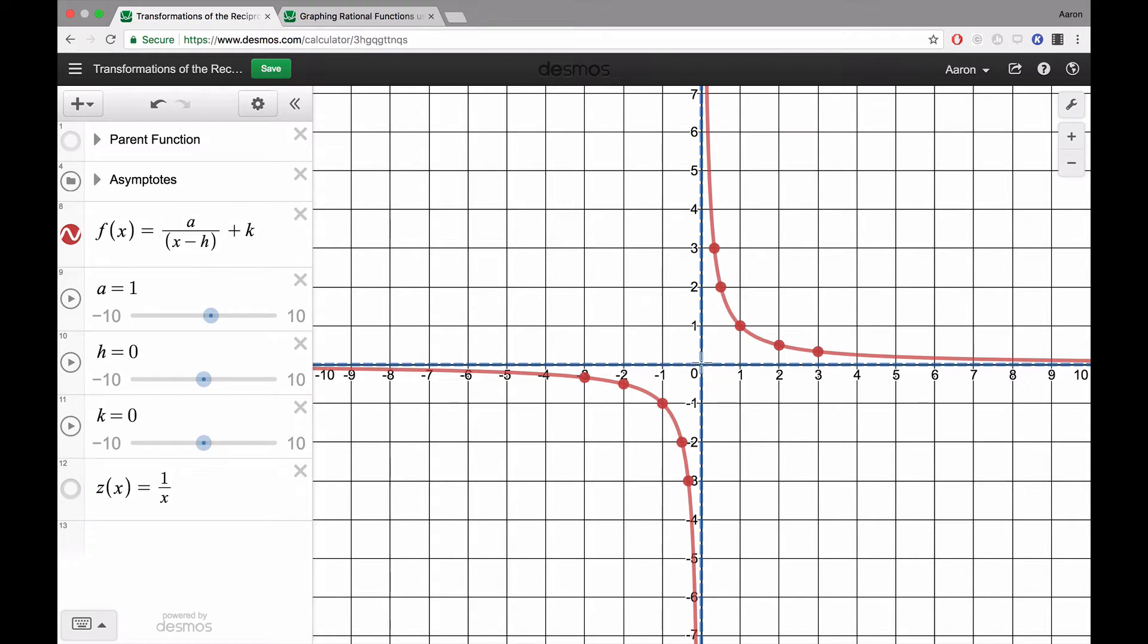In this video, we're going to look at graphing two different rational functions using transformations. The first one we're going to look at is the reciprocal function. It has the equation 1 over x. This was part of the family of functions that you looked at when you were copying down all those functions back in Chapter 2.